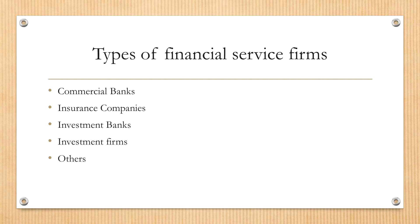Financial services companies are also very unique compared to other types of businesses. The major types include: commercial banks such as Bank of America, Wells Fargo, or First Tennessee — they take deposits and lend money to businesses and households. The second type is insurance companies, such as property, vehicle, and healthcare insurance companies. The third type is investment banks.